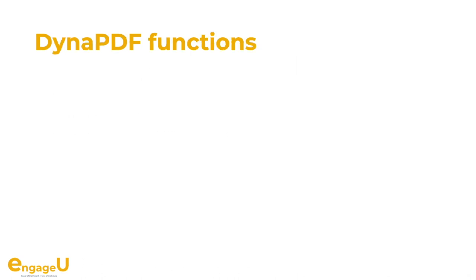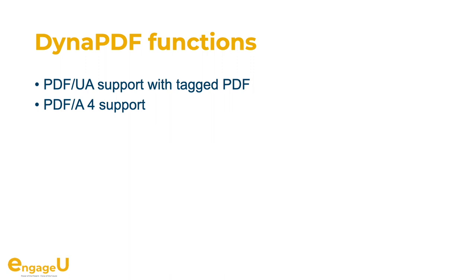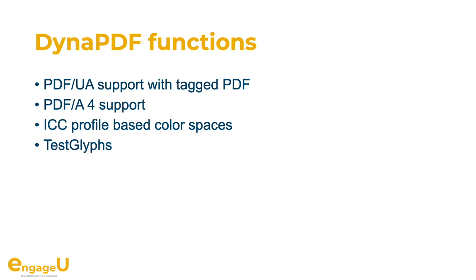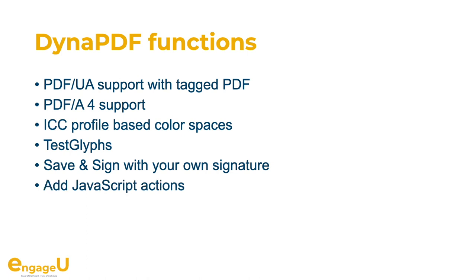For DynaPDF we got quite a few new functions. This includes creating tagged PDF with the PDF/UA standard, which makes them accessible for everyone. Then PDF/A-4 support was added to the plugin, in addition to versions 1, 2, and 3. You can create color spaces based on ICC profiles, use our test glyphs function to check if certain text can be written with the current font without an error message, save and sign a PDF providing your own signature from a web service, add JavaScript actions to your PDF so a button does something in Acrobat Reader, and create custom annotation appearances with our new Create Edit API function.